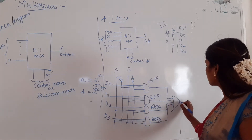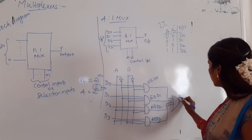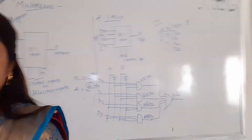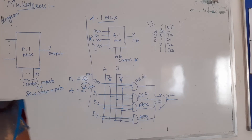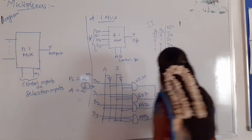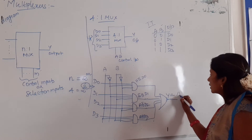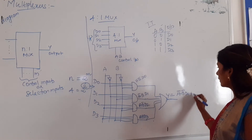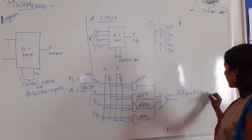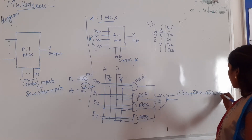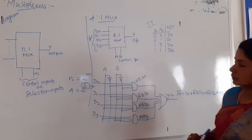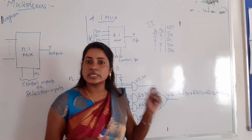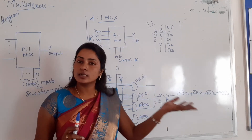The OR gate combines all AND gate outputs. So the output Y equals: A-bar·B-bar·D0 + A-bar·B·D1 + A·B-bar·D2 + A·B·D3. The selection lines A and B are used to select a particular data line to the output.